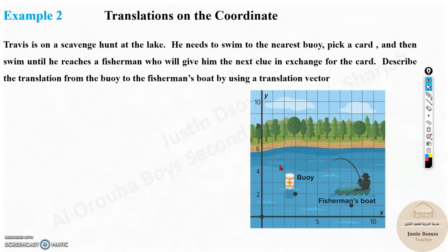And now we will see a real world problem over here. We have translations on coordinates. Travis is on a scavenger hunt at the lake. He needs to swim to the nearest buoy, pick a card, and then swim until he reaches a fisherman who will give him the next clue in exchange for the card. Describe the translation from the buoy to the fisherman's boat by using a translation vector. Now, over here, there's a buoy. A buoy is basically a floating thing in the sea that is used to guide or mark something generally. But anyways, now there is a card over here. A person needs to pick this card up and then he needs to swim to the fisherman and give the card. That's like a treasure or scavenger hunt.